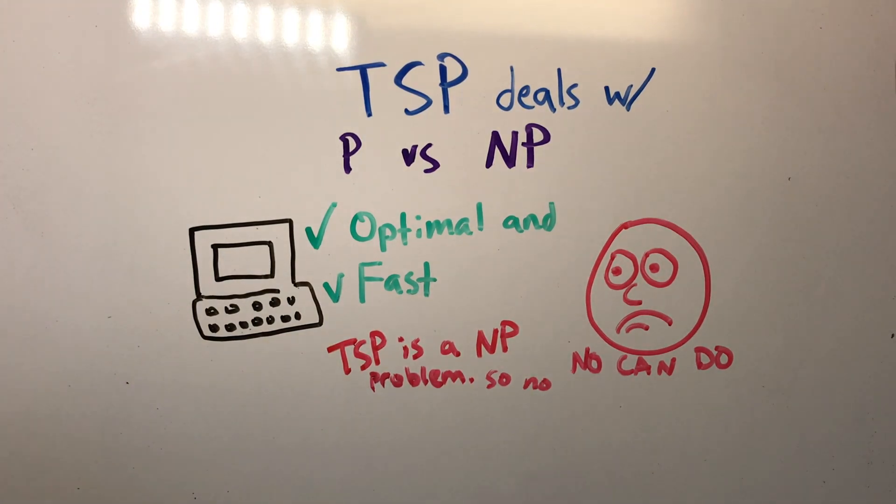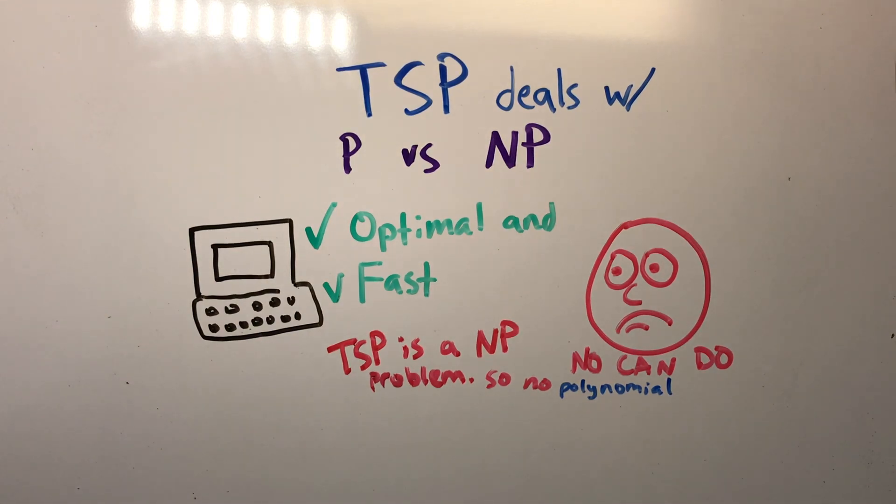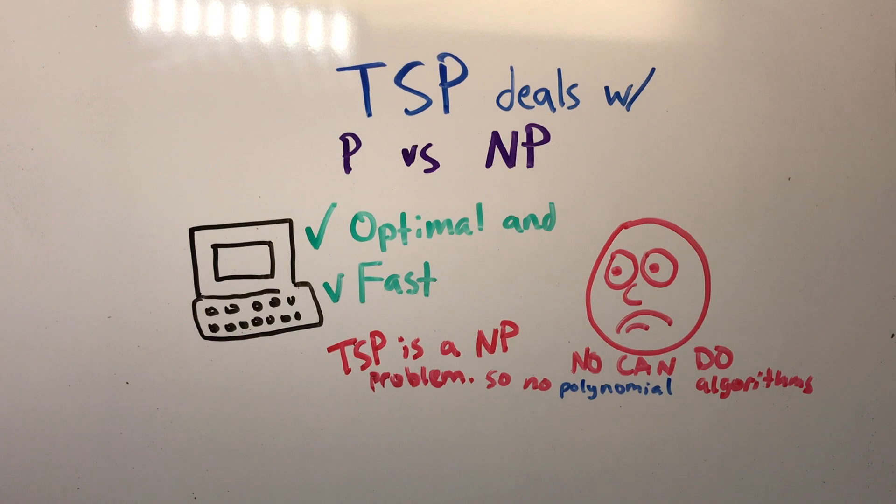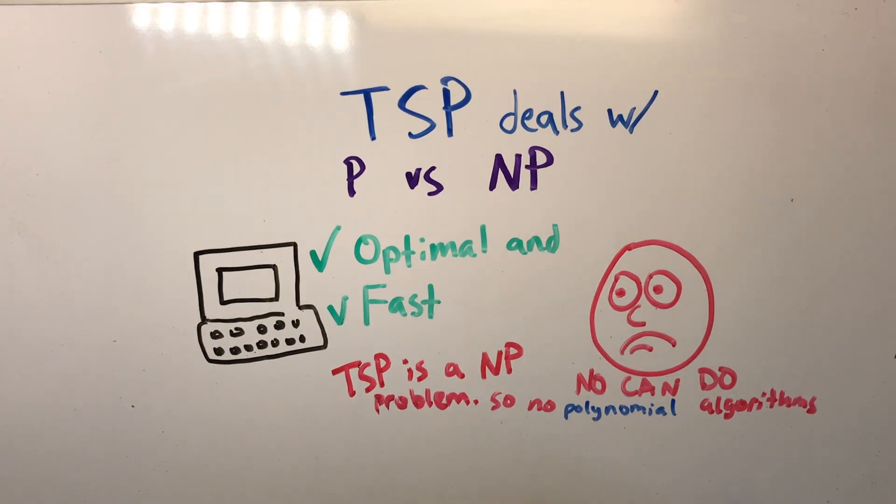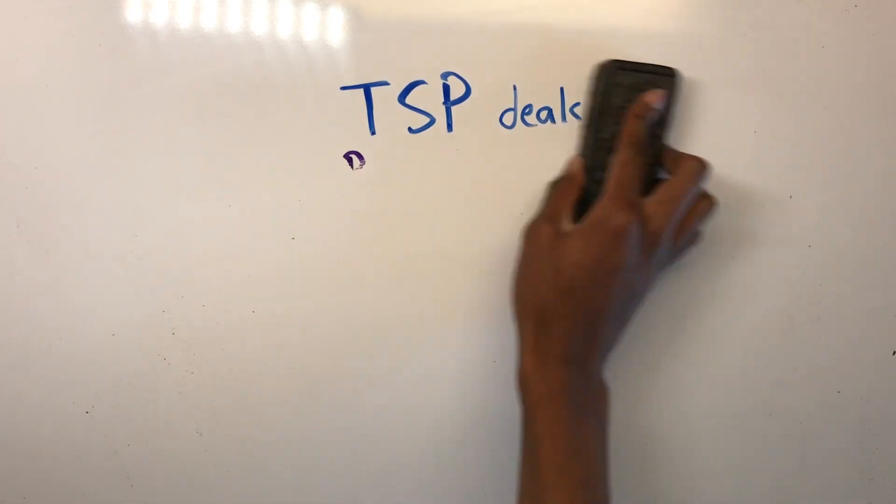The algorithms that find the optimal path don't do it very quickly, and the algorithms that operate quickly aren't able to find the optimal path and can only find an approximation of what the optimal path would be. We are going to be discussing three types of algorithms for the traveling salesman problem: brute force algorithms, heuristic algorithms, and lastly, approximation algorithms.